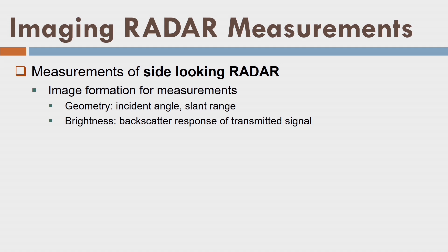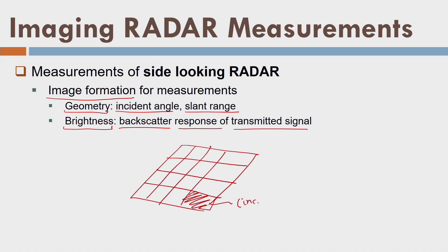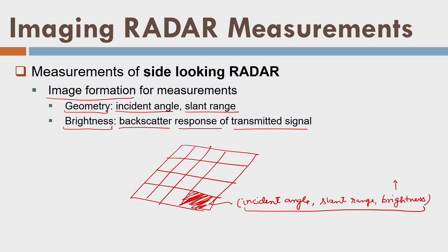What are the measurements of a side-looking radar system? The image is formed using observations. The first observation is geometry: incident angle and slant range. Then we have brightness — the pixel value — which is the backscatter response of the transmitted signal from the terrain surface. In a radar image divided into pixels, each pixel indicates three values: incident angle, slant range, and brightness.